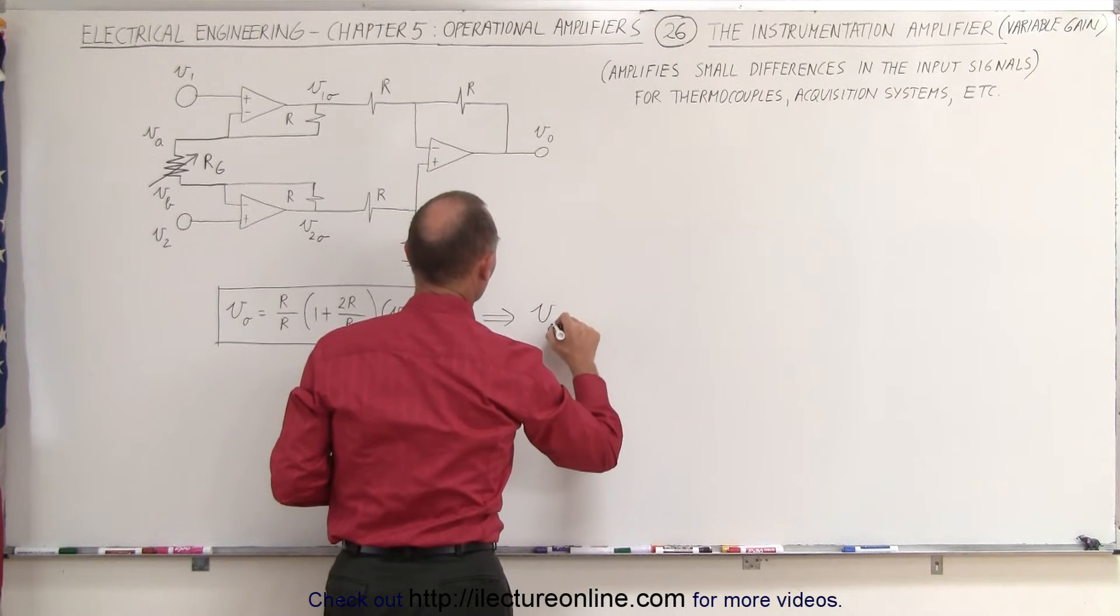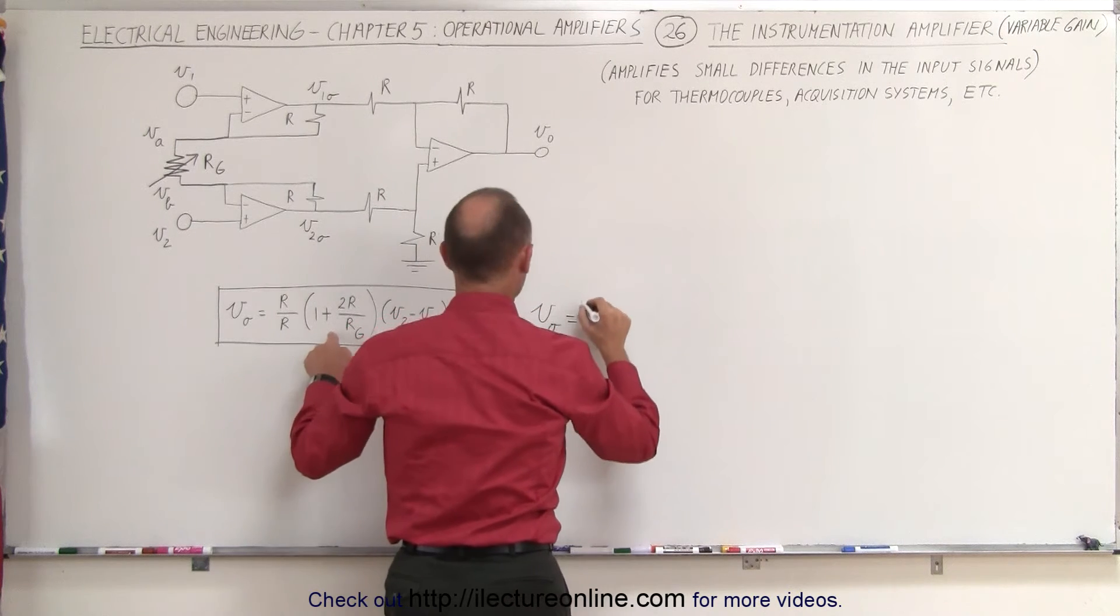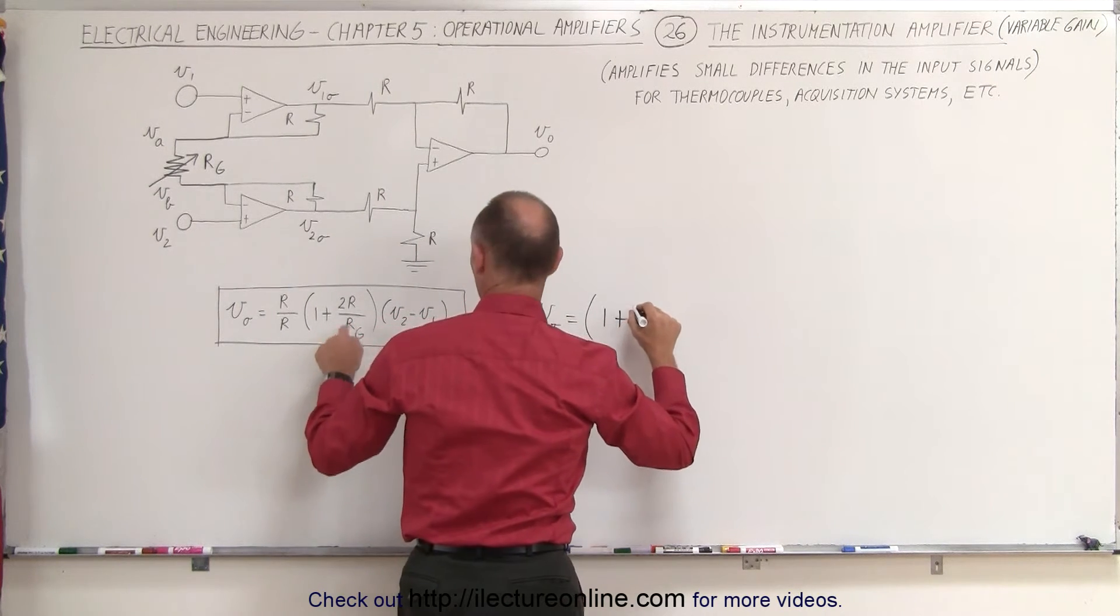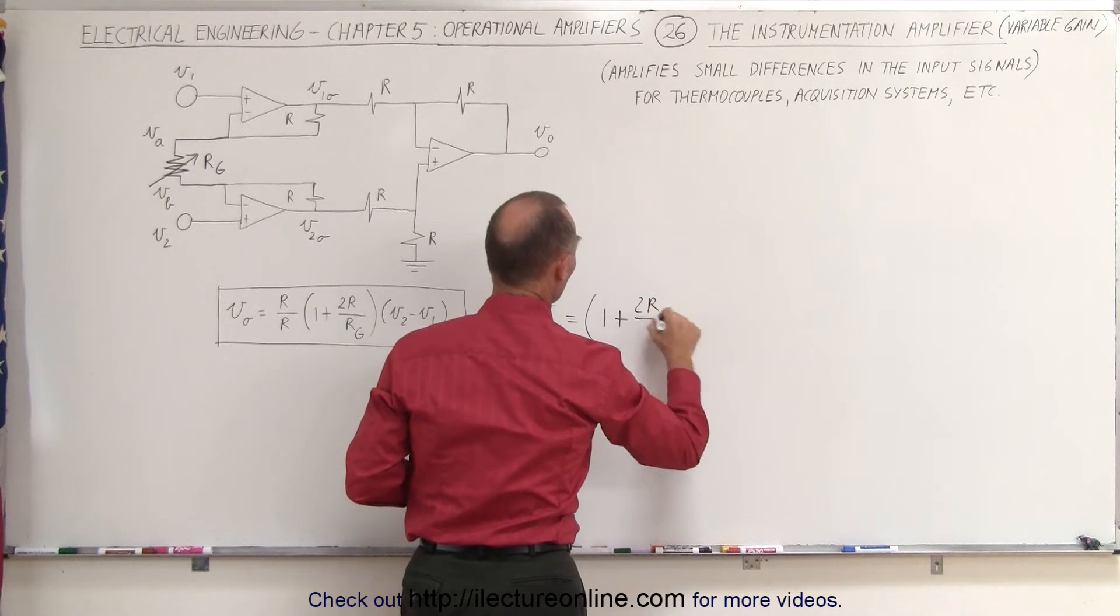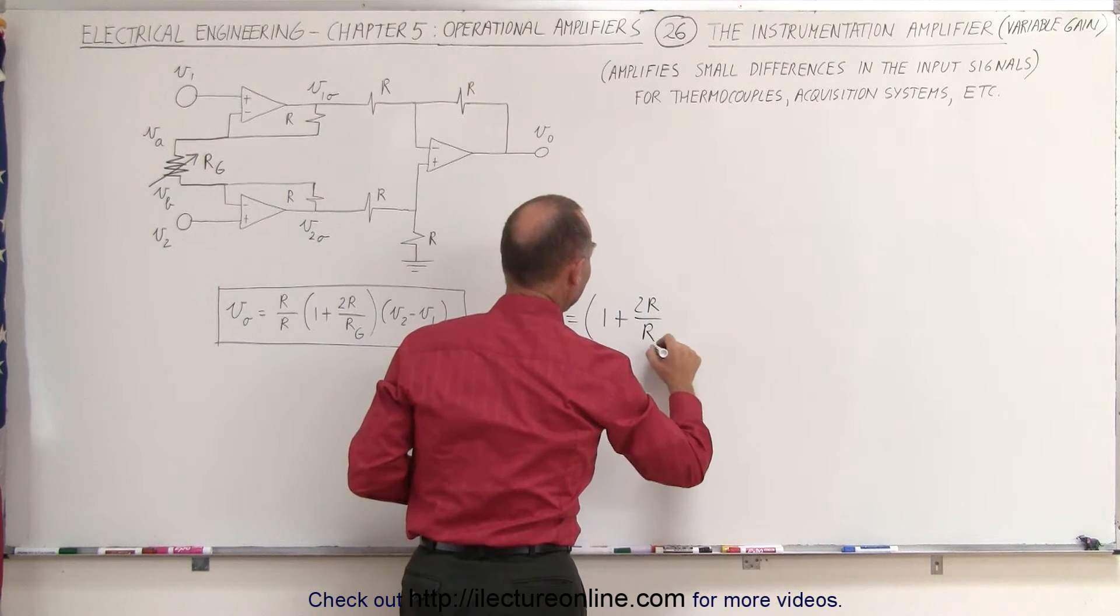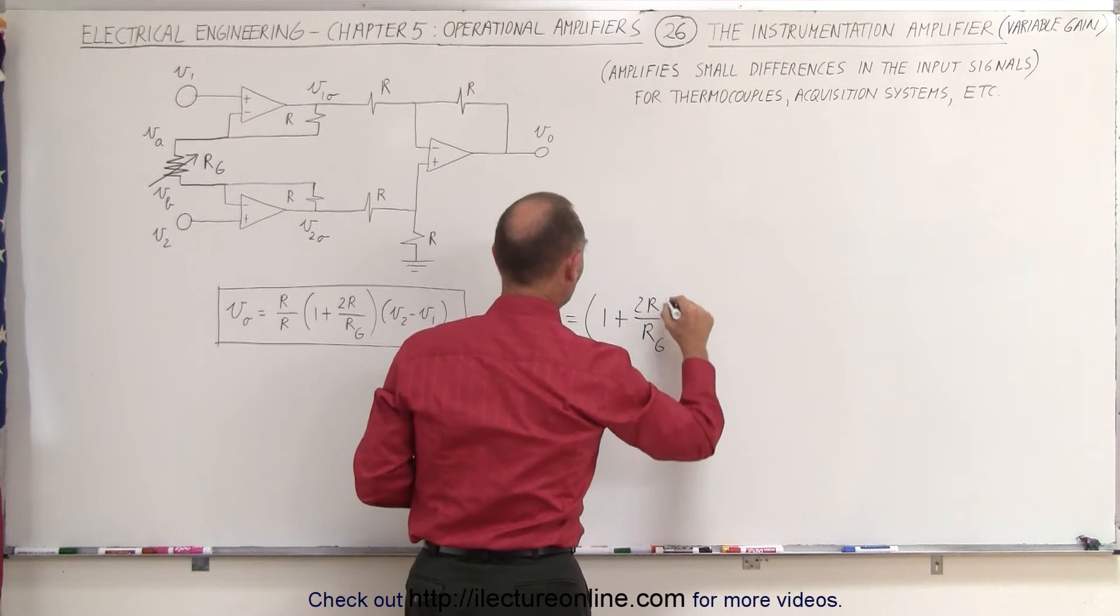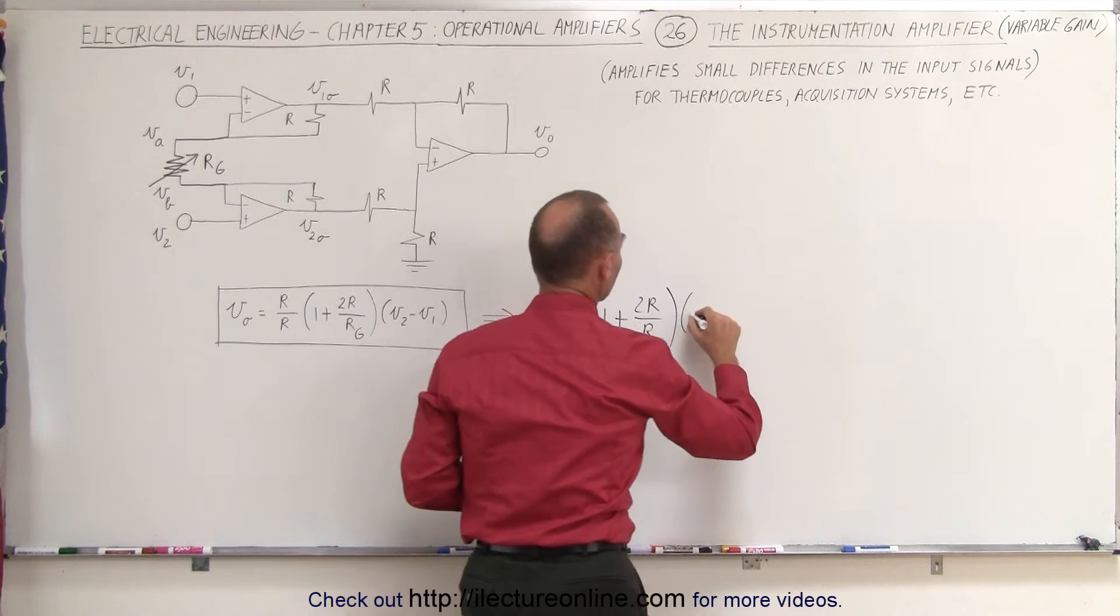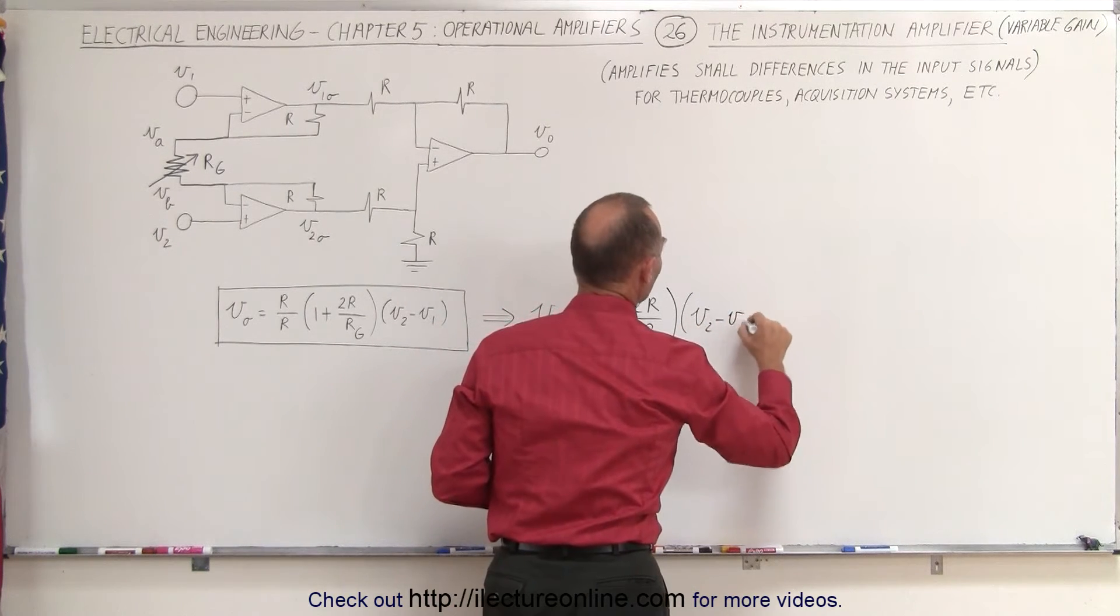It now says that the output voltage is equal to the quantity 1 plus 2 times R over the gain, what we call the gain resistor, times the difference of the two voltages, V2 minus V1.